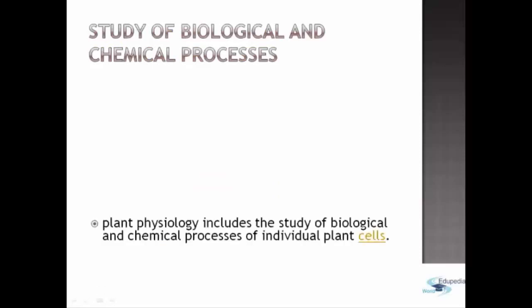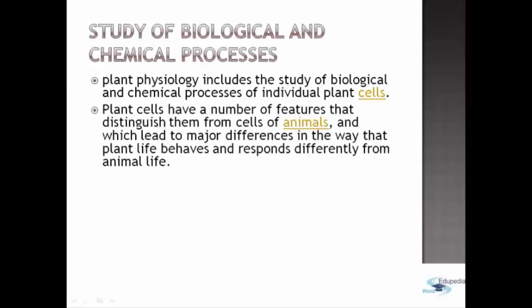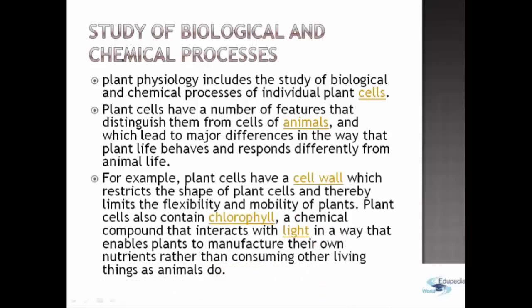Next, we have the study of biological and chemical processes, which is also included in plant physiology. Plant cells have a number of features that distinguish them from cells of animals, and which lead to major differences in the way that plant life behaves and responds differently from animal life. For example, plant cells have a cell wall, which restricts the shape of plant cells and thereby limits the flexibility and mobility of plants. Plant cells also contain chlorophyll, a chemical compound that interacts with light in a way that enables plants to manufacture their own nutrients rather than consuming other living things as animals do.